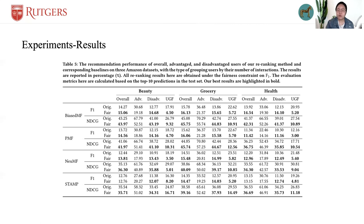which accounts for many more users than the advantaged users. The total performance compromise of the advantaged users is much smaller than the total improvement of the disadvantaged users, which is the reason why the overall performance gets boosted.